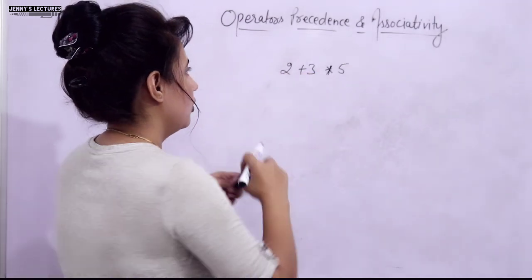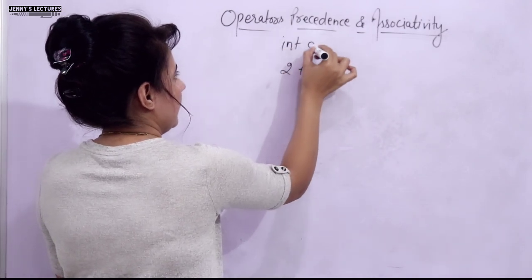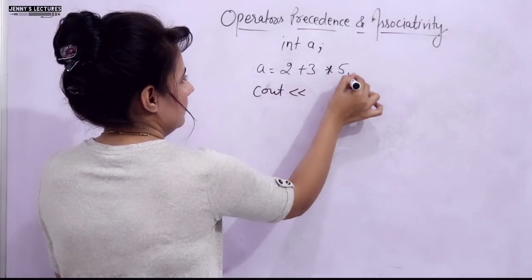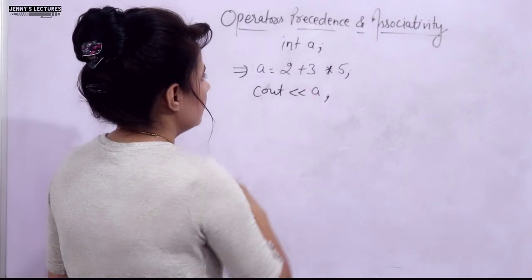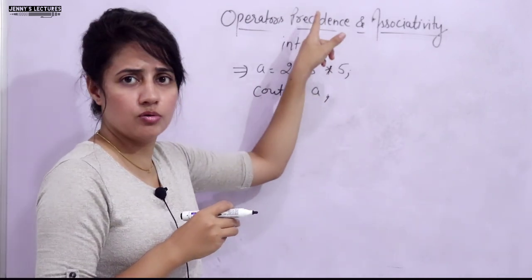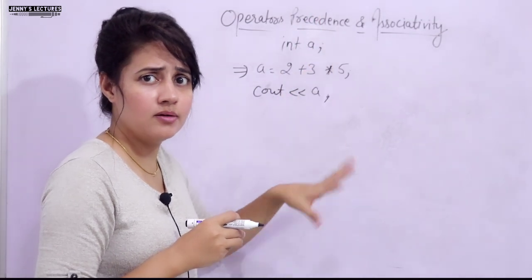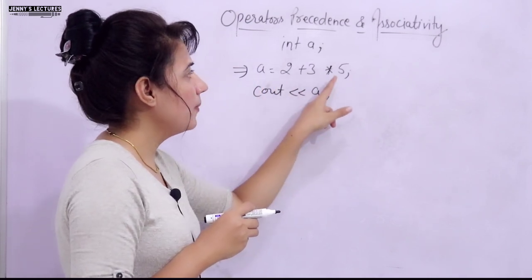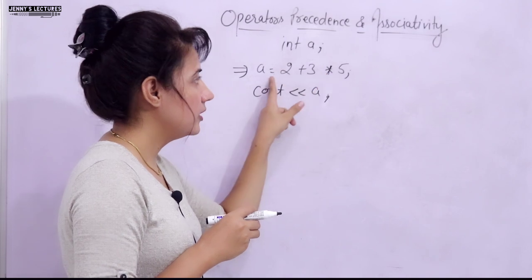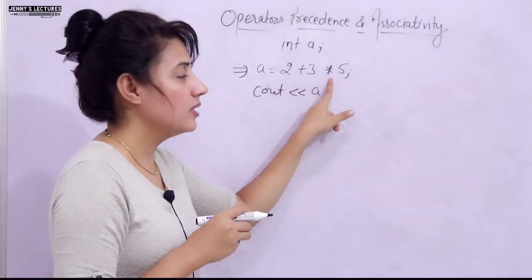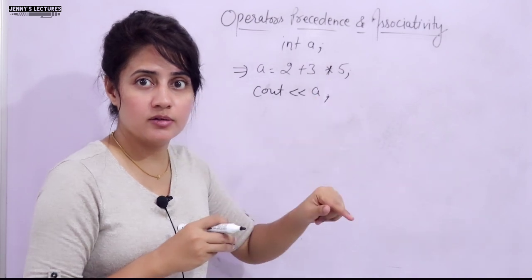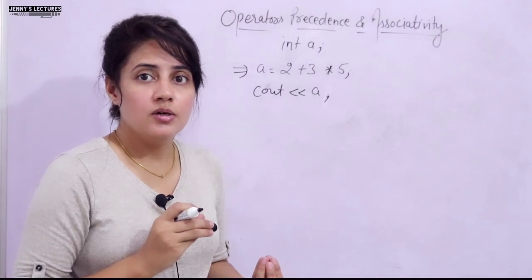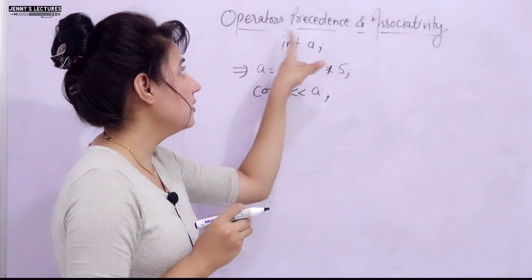For example, consider the expression: a = 2 + 3 * 5. This expression has three operators: the assignment operator and the arithmetic operators plus and multiply. Which operator is executed first is determined by operator precedence.